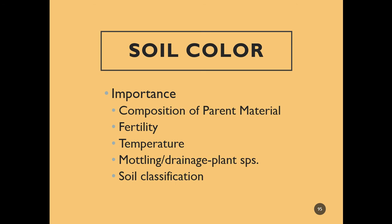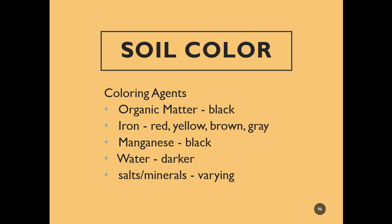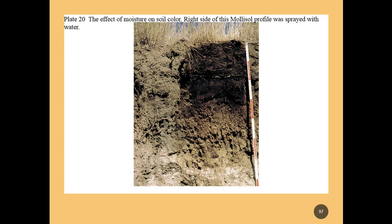So color is determined by organic matter, different elements in the soil — iron, manganese, and other salts and minerals — as well as the amount of water. Water can affect a profile. Here is a mollisol. On the right, we see the profile has just been wetted — this was exposed and dried out, then sprayed with water on the right. Between the right soil and the left soil, it's the exact same soil — this side has just been wetted. So that's the importance of moisture when determining soil color.